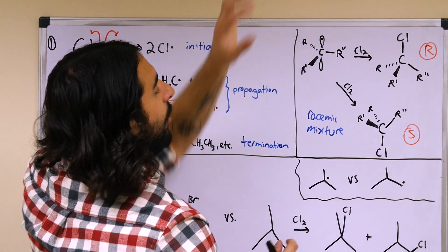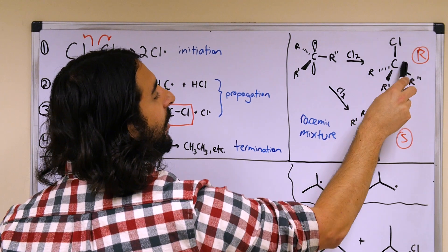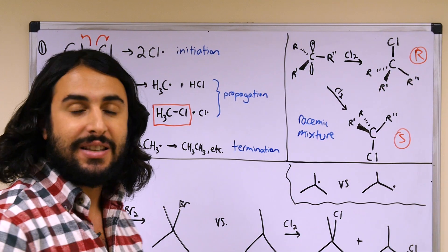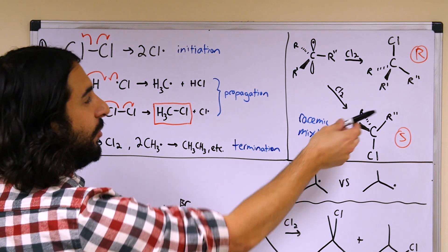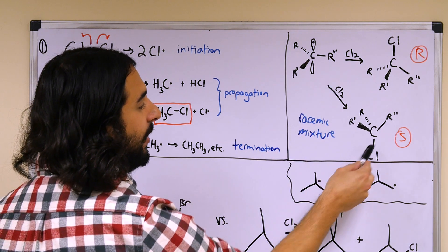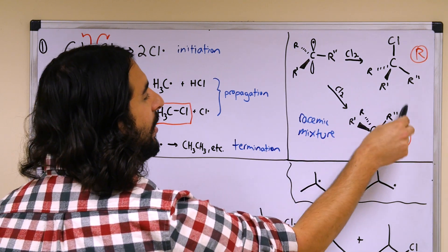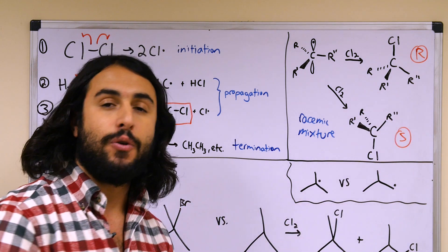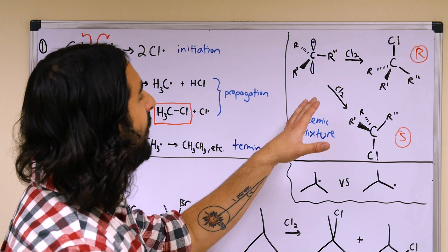Similarly it could approach from the bottom, and then the chlorine would now be on the bottom here. Well, these three different groups dictate that we have formed a new stereocenter, so we have to be aware of the possibility of forming a racemic mixture of enantiomers when we are looking at radical mechanisms.